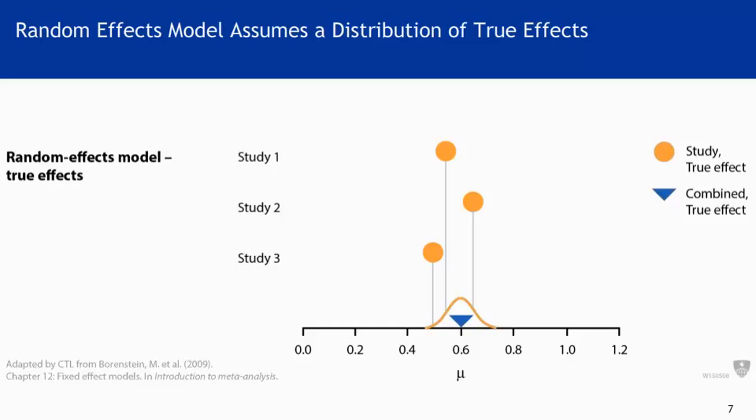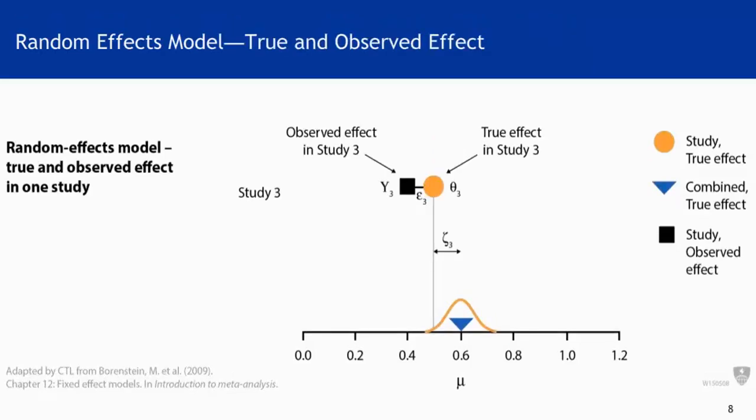The circles represent the true effect in each study — we're using the same three-study example. Under the random effects model, these three circles no longer coincide with each other; there is a distribution. The little normal curve underneath the circles shows the distribution of the true effect size from those three studies. The observed effect size in study three, y3, now differs from the true effect in study three by that epsilon — the within-study error term. Because we assume the true effect size follows a distribution, there is one more source of variability, denoted as zeta three.